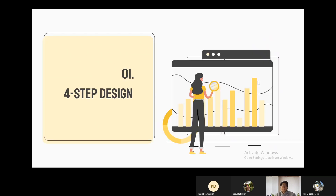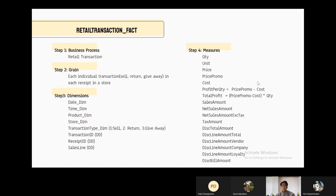Starting with the first part: four-step design. Step one, we define the business process as retail transaction. Step two, the grain is each individual transaction, which is sale, return, and giveaway in each receipt in the store, which means each row represents an individual transaction that occurs in each receipt.